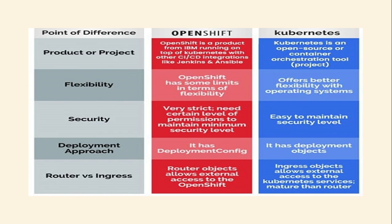Looking at key differences: first, product versus project. OpenShift is a product from Red Hat — now owned by IBM — running on top of Kubernetes with integrations like Jenkins. Kubernetes is an open source container orchestration tool. In terms of flexibility, OpenShift has some limits whereas Kubernetes offers better flexibility with operating systems. For security, OpenShift is very strict, requiring certain permissions to maintain minimum security levels, while Kubernetes is easier to configure. For deployment, OpenShift uses deployment configs while Kubernetes uses deployment objects. For external access, OpenShift uses router objects while Kubernetes uses ingress objects, which is more mature than routes.